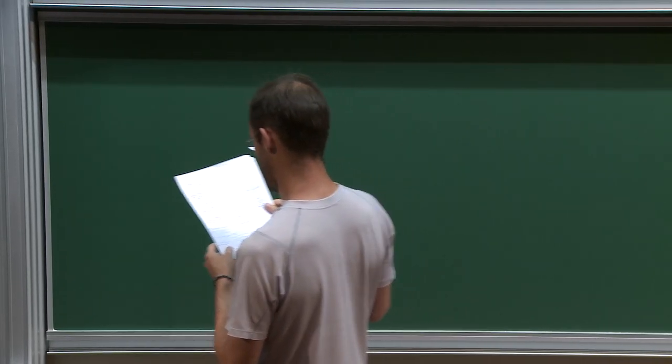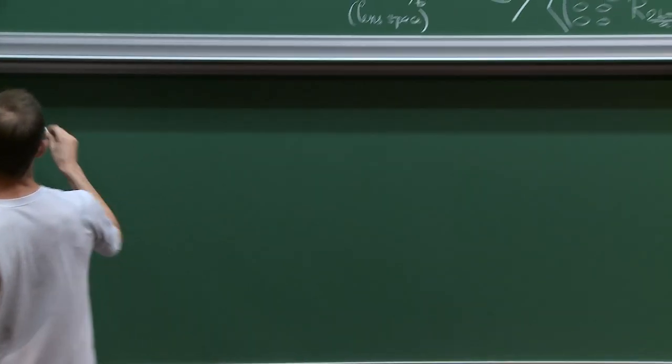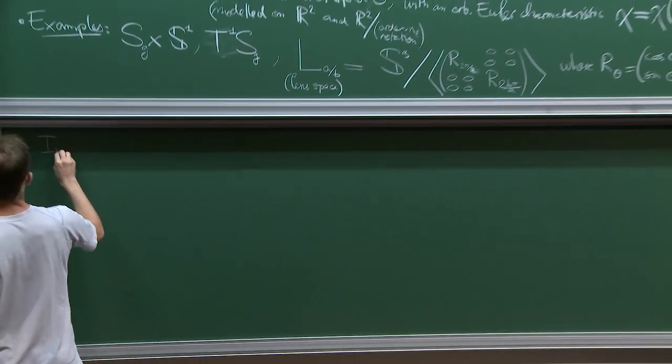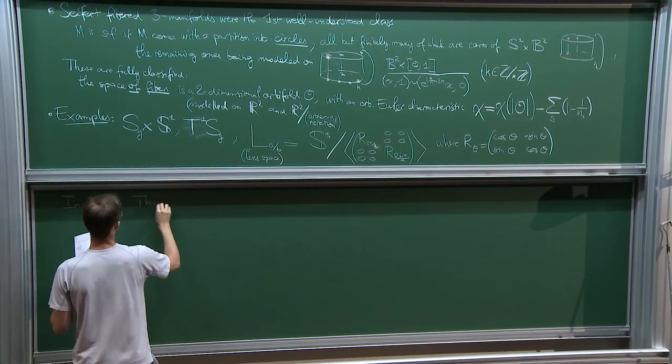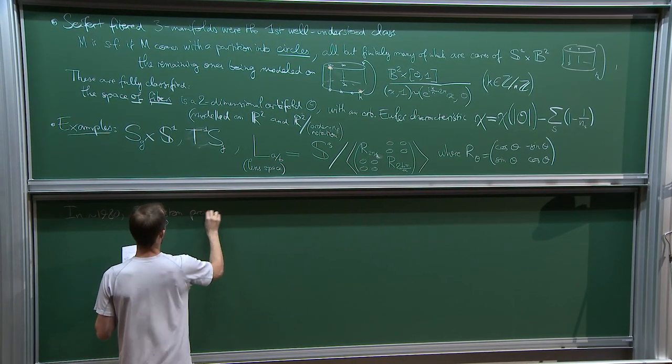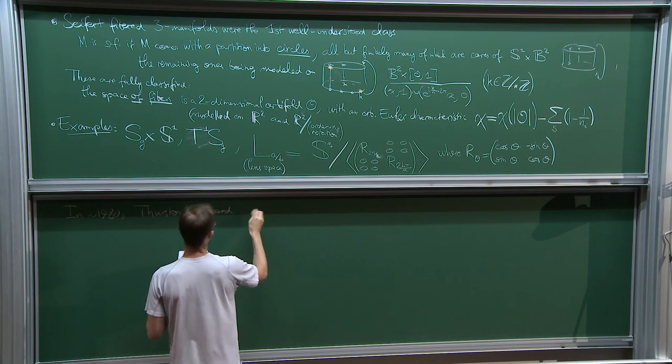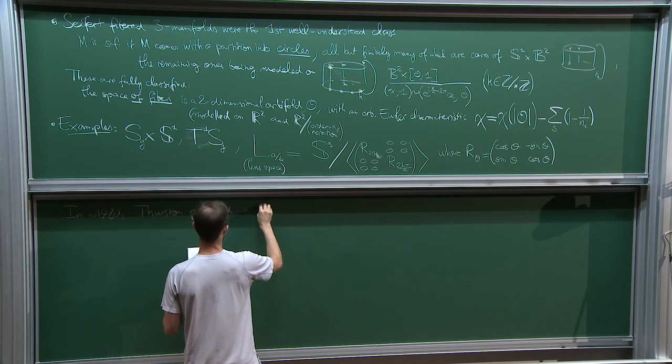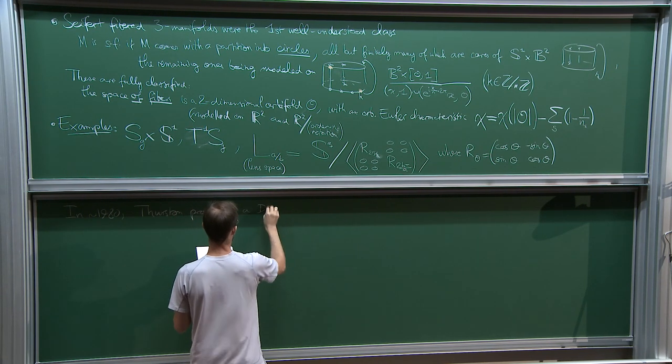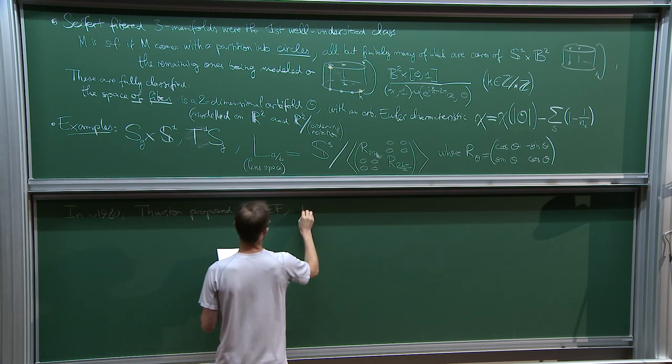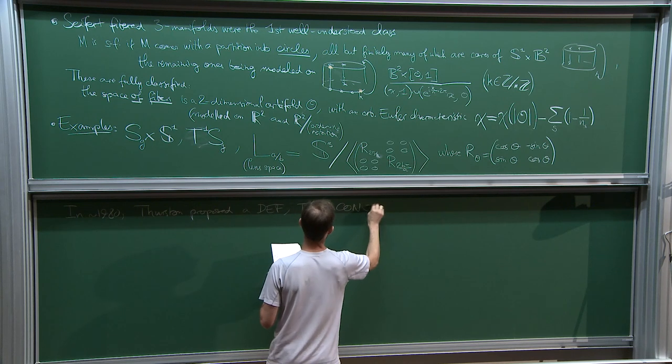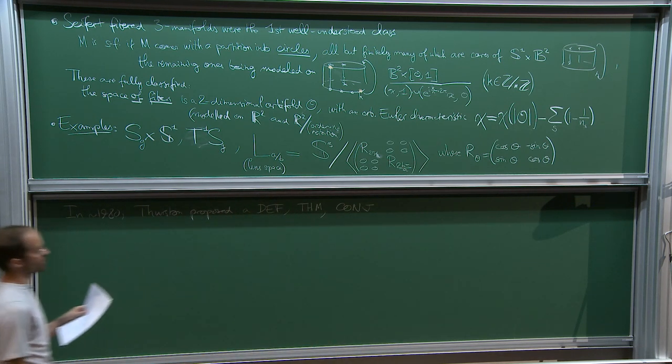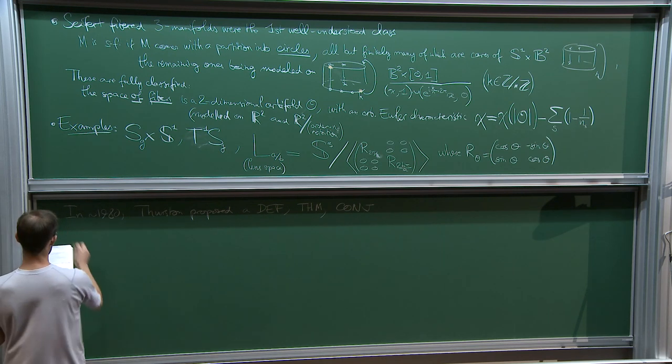Right, you act on S3 by such a composition of rotations and the quotient is in fact a smooth manifold that comes with a Seifert-fibered structure. In fact with many Seifert-fibered structures and there's a question about this in your exercise sheet. Okay, now in 1980 Thurston proposed, so I'm going to give it as a definition, a theorem, and a conjecture. I'm going to state all of these. It's going to take me a few blackboards. First, the definition.